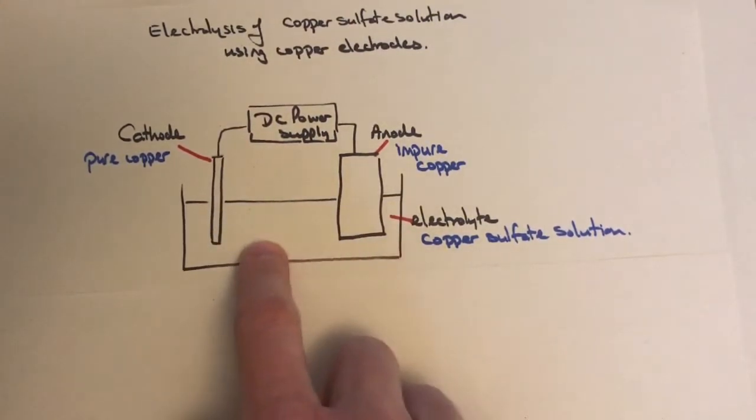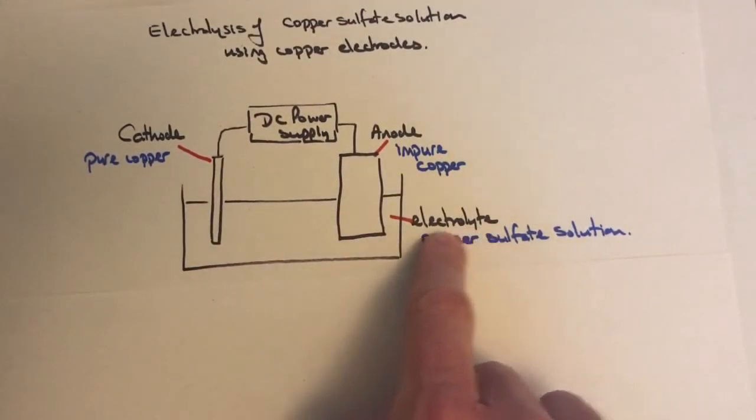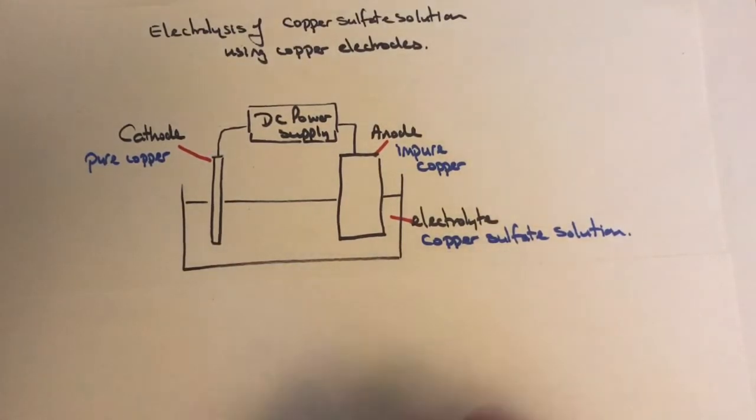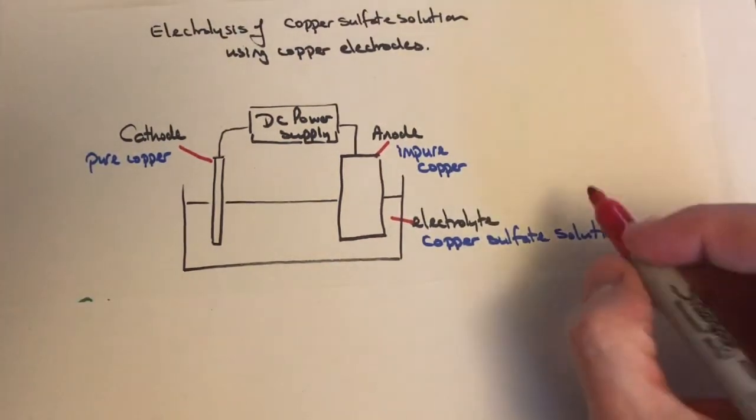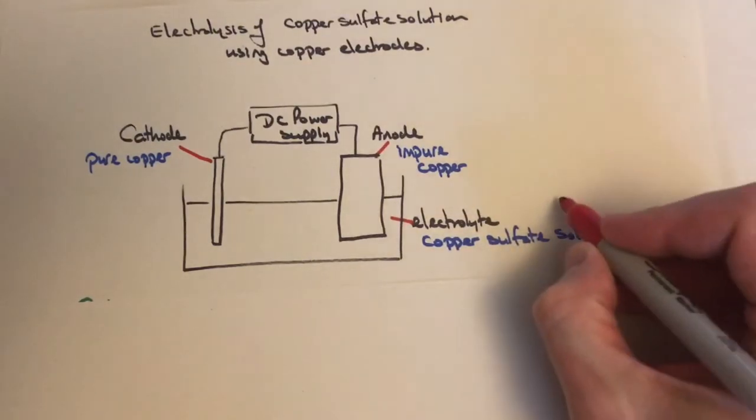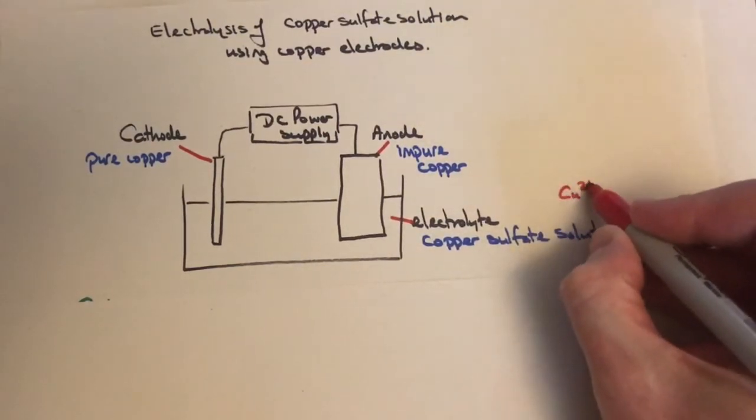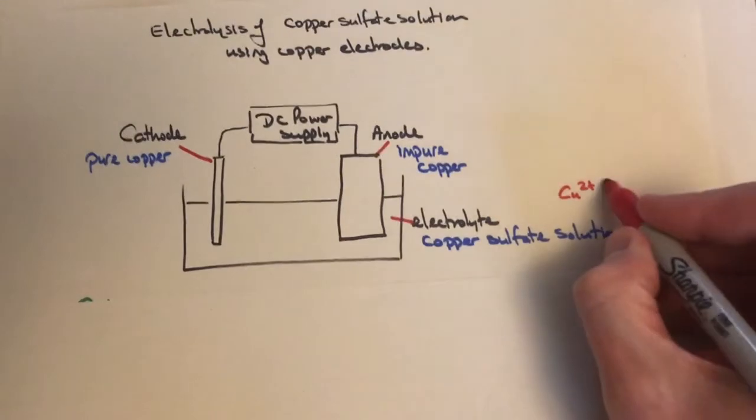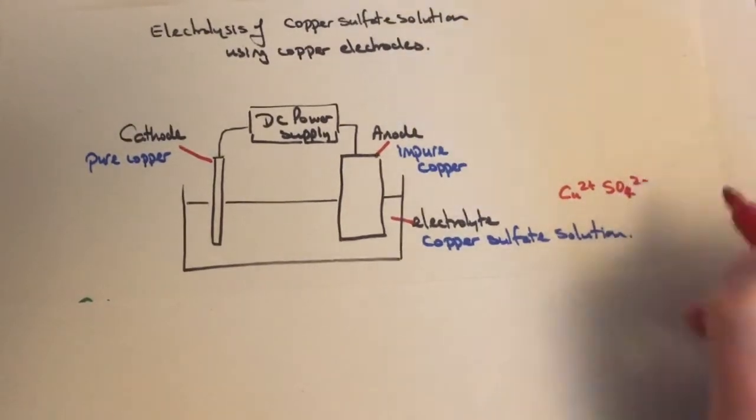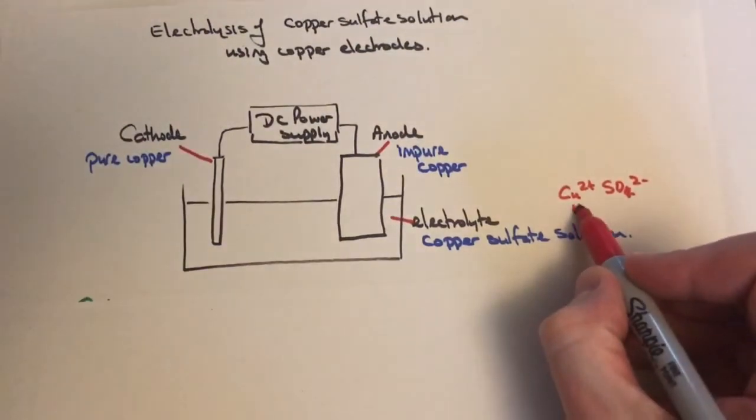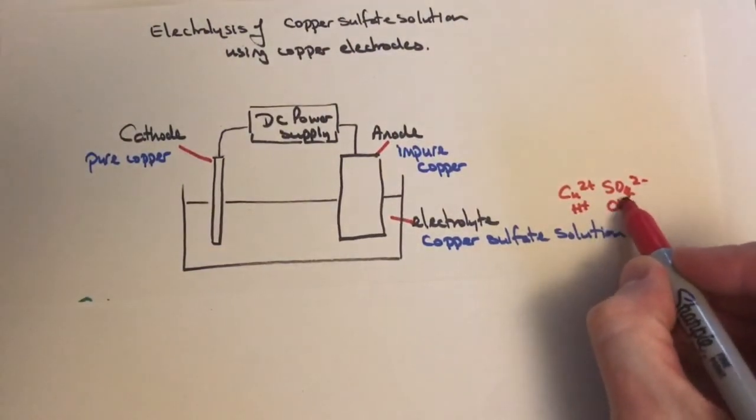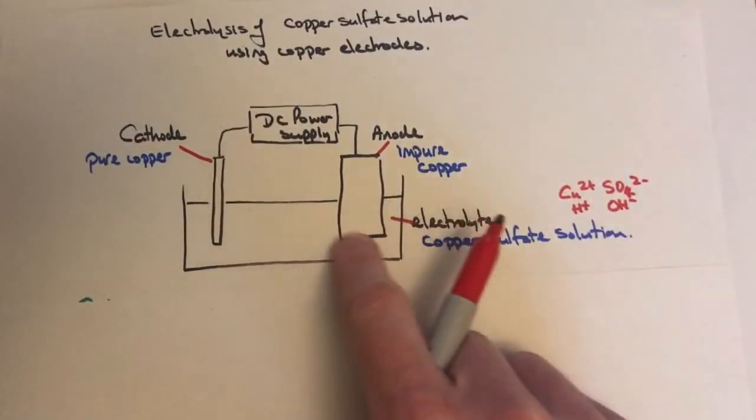These electrodes are both sitting in an electrolyte. Remember, electrolyte means the ions are free to move. This is a solution of copper sulfate, which contains copper ions (Cu²⁺) and sulfate ions (SO₄²⁻). Because it's in water, it also contains H⁺ and OH⁻ ions all moving around freely.